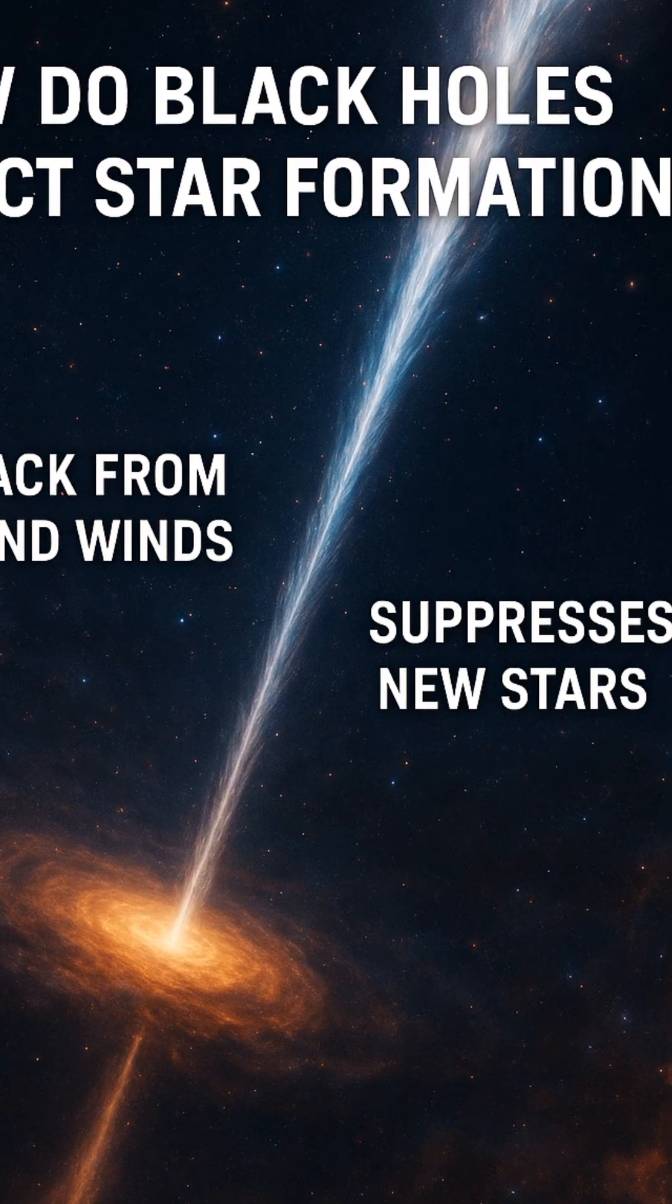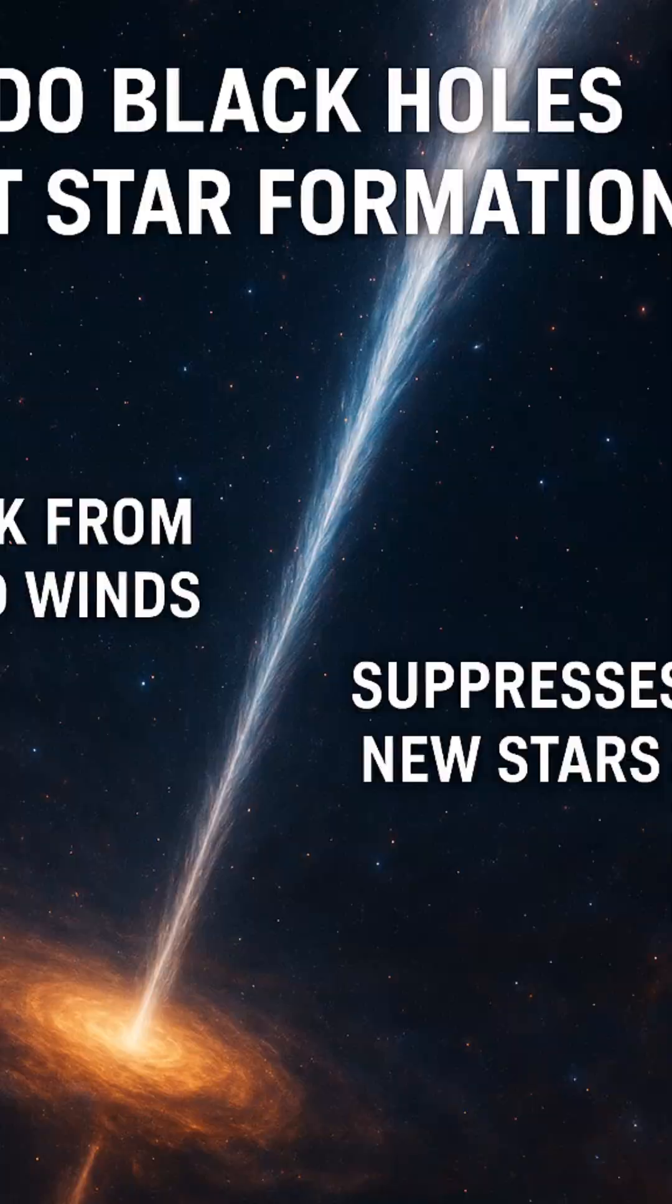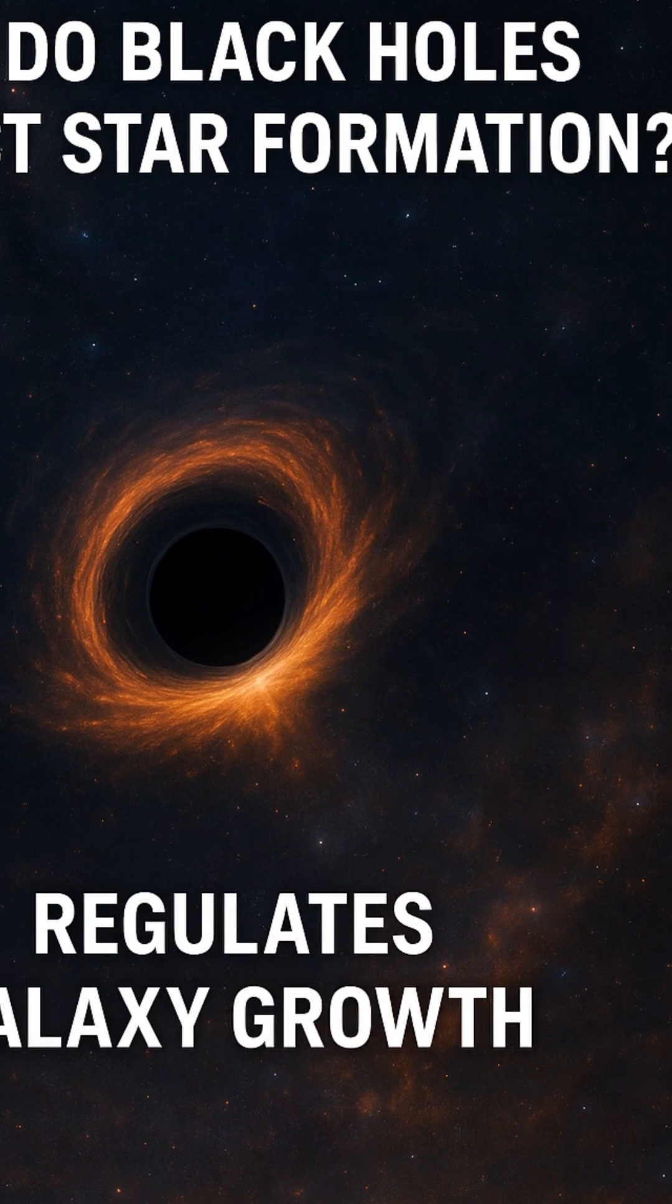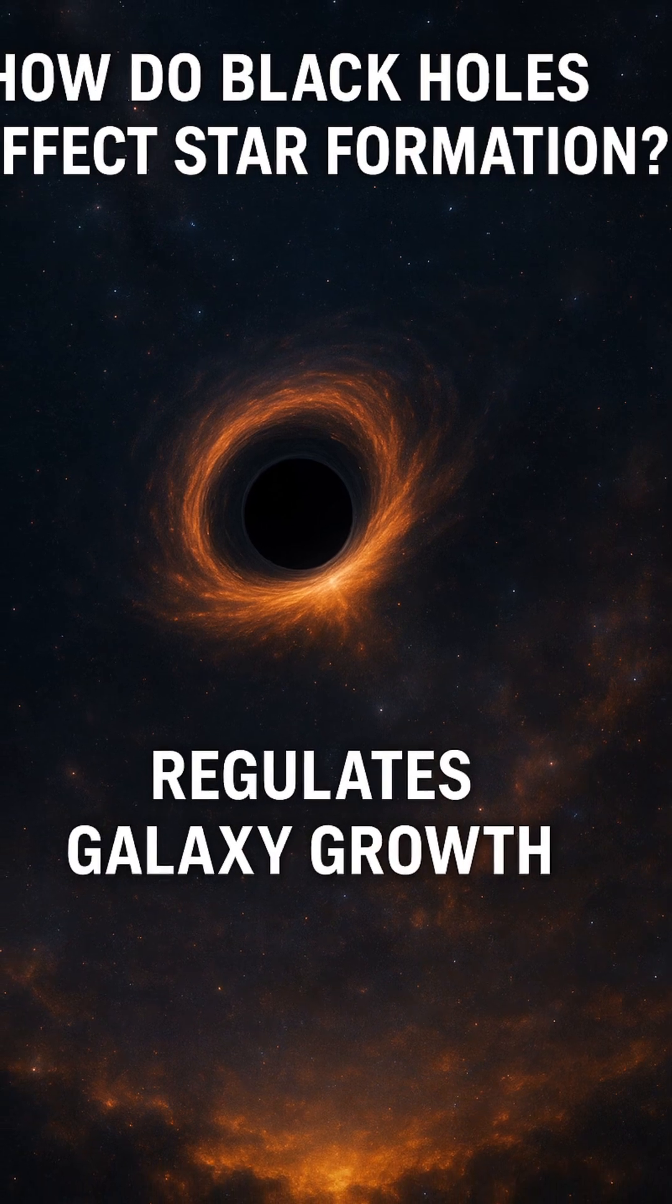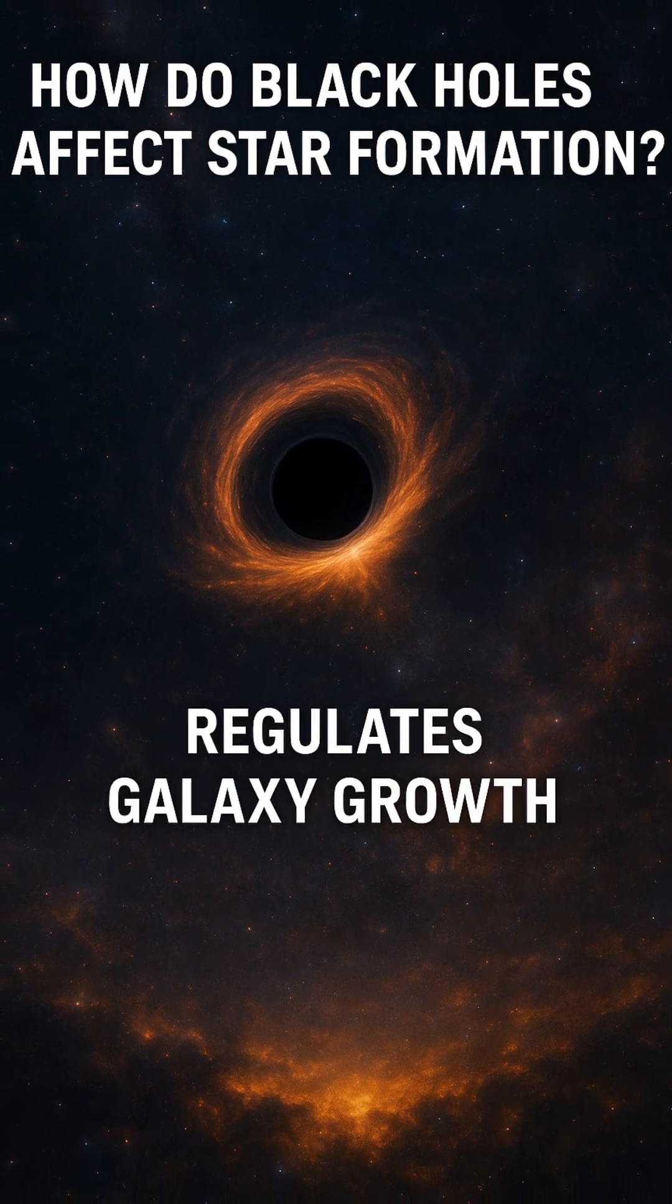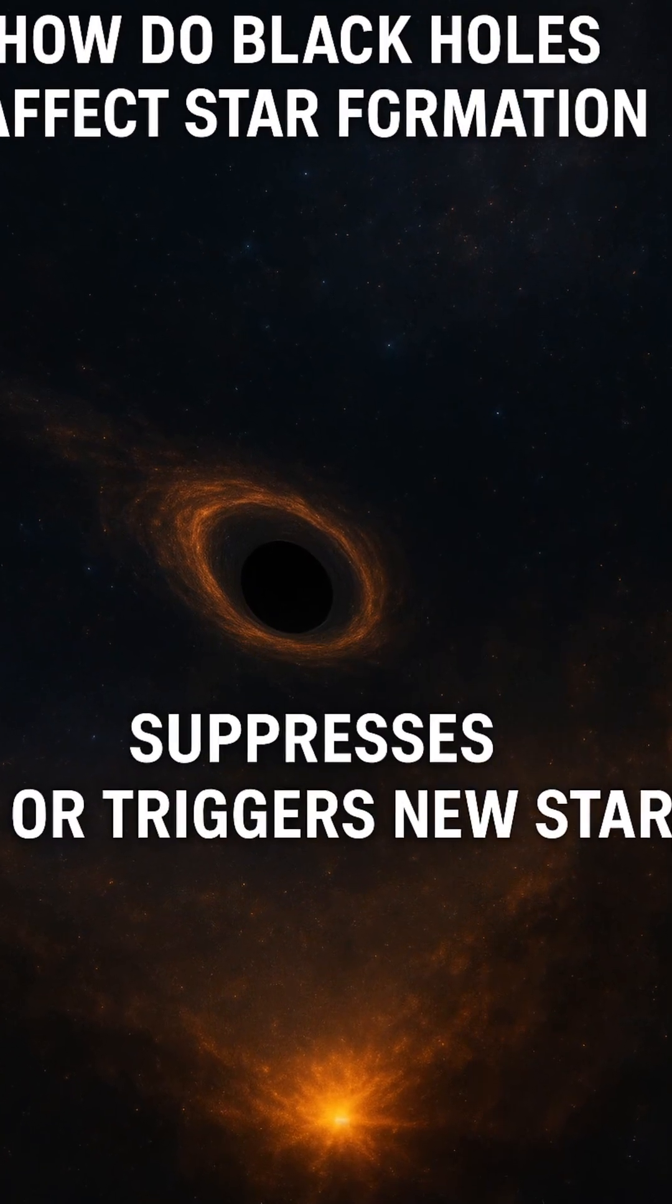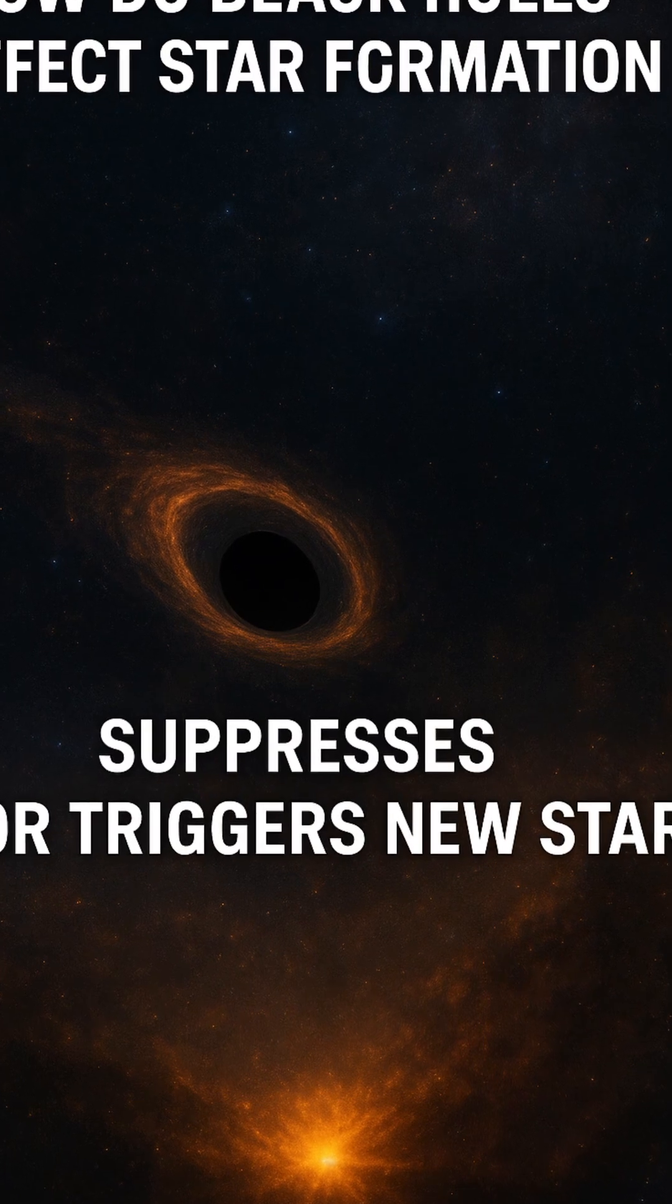When these giants consume surrounding gas and dust, they often release tremendous amounts of energy in the form of jets and winds, a phenomenon known as feedback. This feedback doesn't just stay confined near the black hole. It extends across vast interstellar distances, impacting entire star-forming regions.